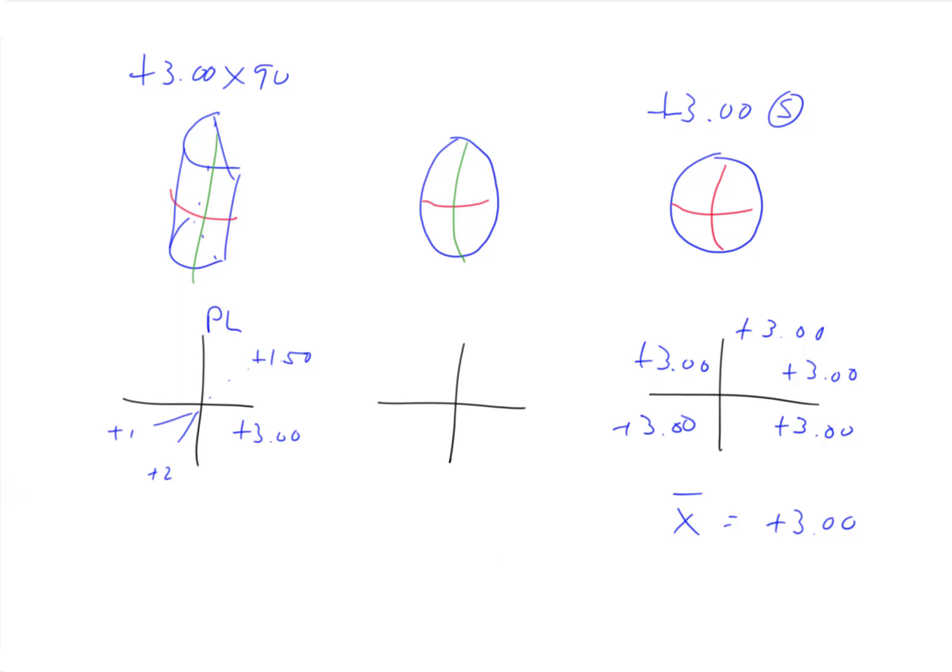The average power, if we were to find the power everywhere on the lens, and then average it out, would be plus 1.50.